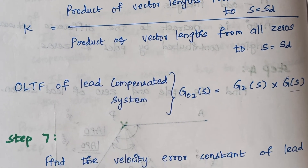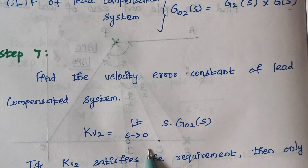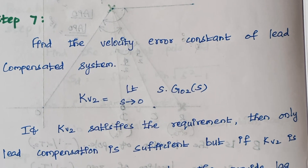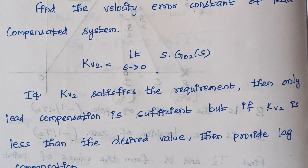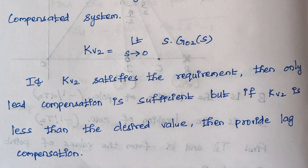Step 7: Find the velocity error constant of the lead compensator system to check whether the design meets the required specifications. The velocity error constant Kv2 is given by the limit as s tends to 0 of s times the open-loop transfer function of the lead compensator. If Kv2 satisfies the requirement, then lead compensation alone is sufficient. If Kv2 is less than the desired value, we proceed to lag compensation.